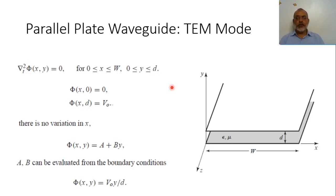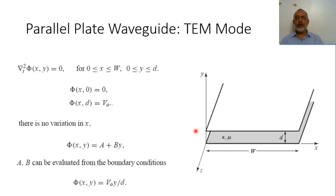In the previous video, we have seen how to solve the problem of the general transverse electromagnetic waveguide. Now in this video we are going to apply the steps of the solution for the transverse electromagnetic mode in a waveguide for the case of the parallel plate waveguide. In the parallel plate waveguide, we are assuming we have two parallel conducting planes, extending in the x direction towards infinity, separated by a distance d, and filled with a dielectric material of permittivity epsilon and permeability mu.